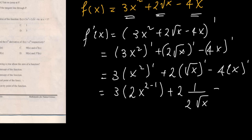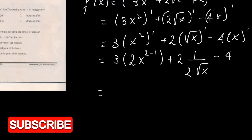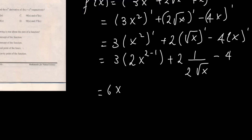The derivative of x is just 1, so 4 times 1 will be 4. By the power rule, 3 times x squared gives 6x. Then 2 times the derivative of square root of x: the 2 cancels, giving 1 over square root of x. So f derivative of x equals 6x plus 1 over square root of x minus 4.